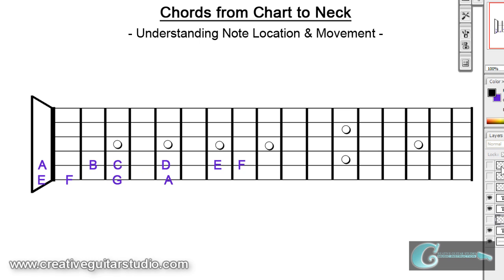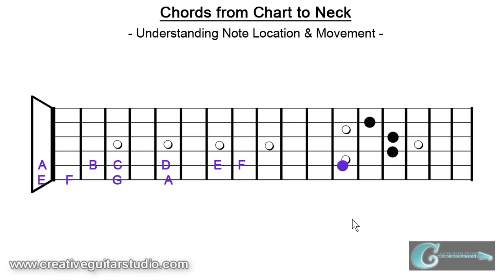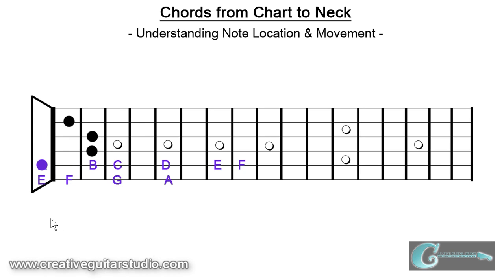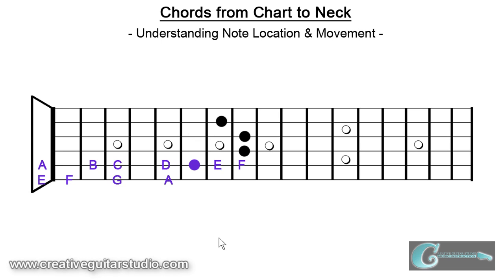Let's go to another chord type that is very popular — this one is the minor equivalent of that major we were just working with. Here's our fifth string root minor movable chord shape. Again, place the root on F and you'll have F minor, place it on E for E minor, D minor, C minor, B minor, A minor if you put it in open position. If you needed a C sharp minor, you could put it right there in front of the C. If you needed an E flat or F sharp, just as simple as that.